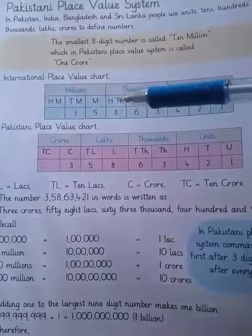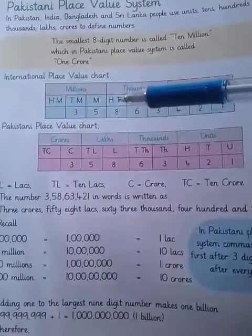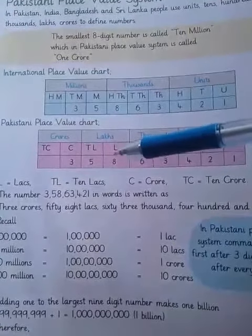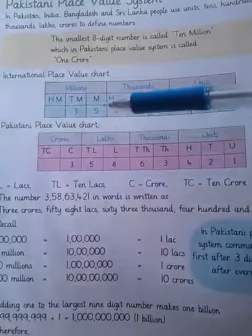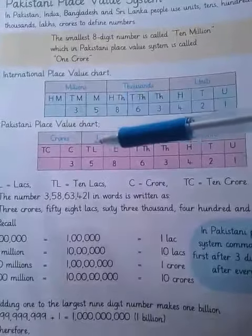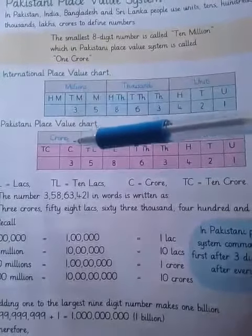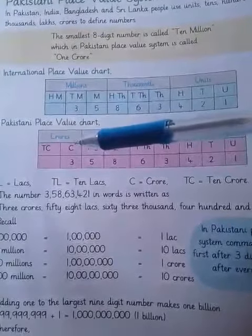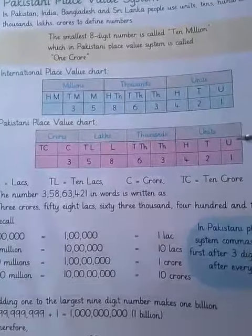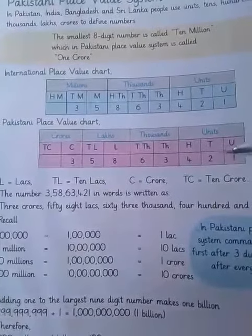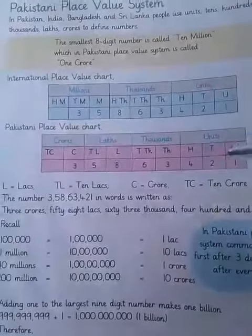In the Pakistani system, 100,000 in international equals one lakh, and one million equals ten lakh. Ten million is equal to one crore. So in the Pakistani place value chart, these are the key equivalences to remember.